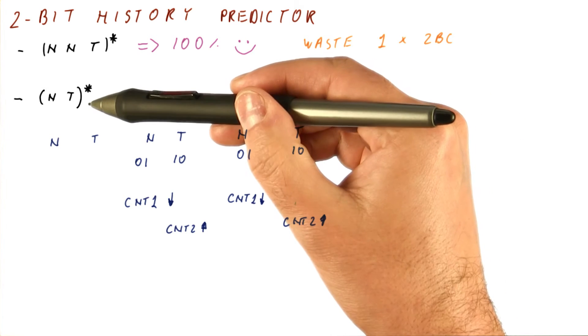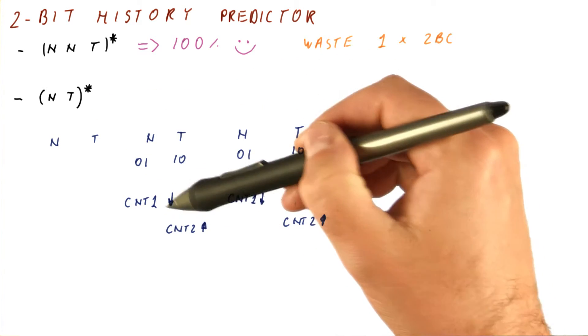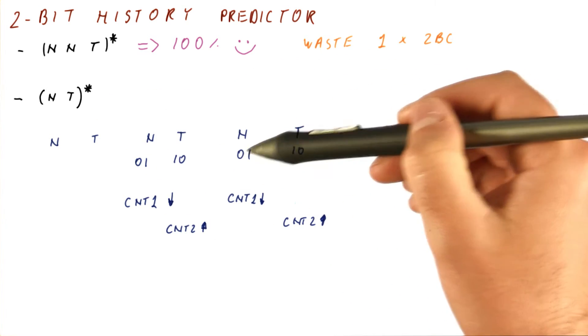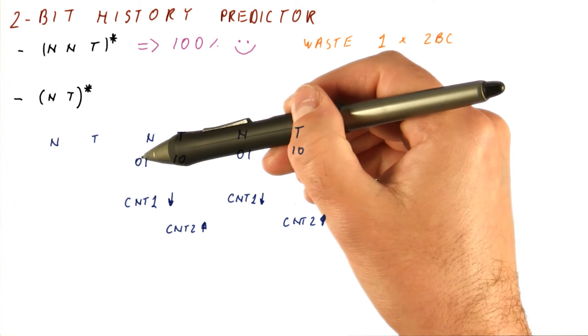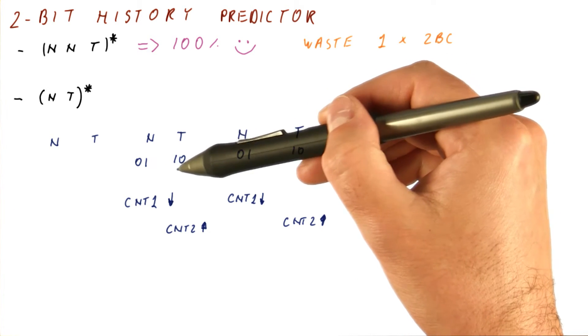As you can see, for this pattern, counter 1 and counter 2 will very soon start predicting correctly. And there are really only two of these counters used. One because the history can be 0, 1, and one because the history can be 1, 0.